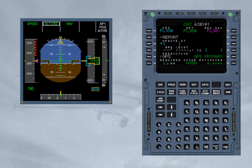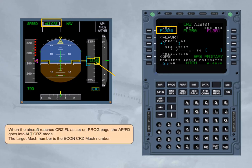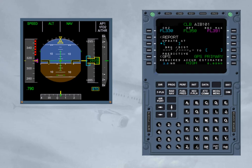When the aircraft reaches cruise flight level as set on the PROG page, the Autopilot Flight Director goes into altitude cruise mode. The target Mach number is the Econ cruise Mach number. If the aircraft is cleared by ATC at a level different from the one inserted on the PROG page, altitude will be displayed on the PFD. It is recommended to update the cruise flight level on the PROG page to the new value for flight efficiency.